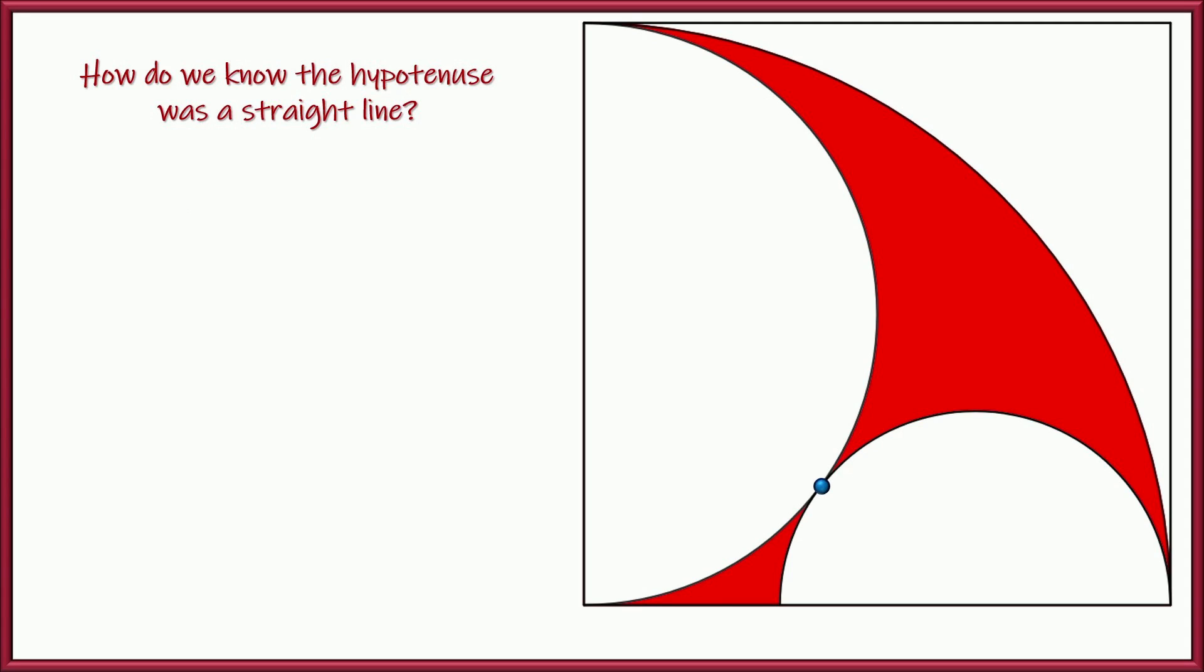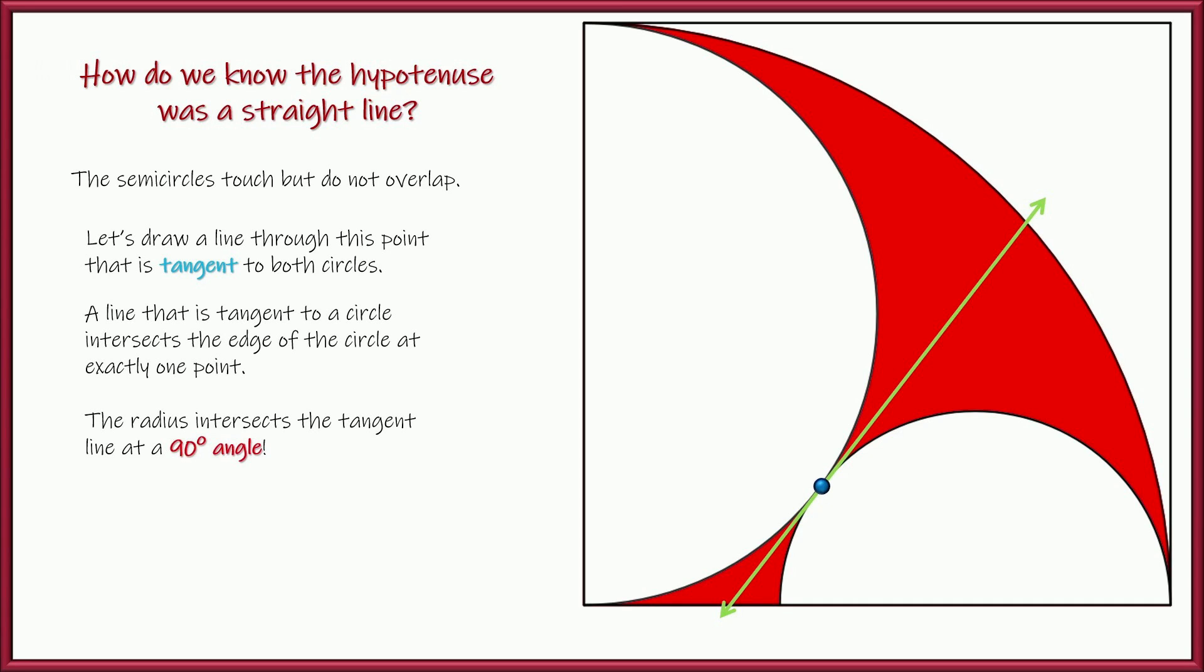So, yeah, we could formally ask the question, how do we know that that was a straight line? Well, here's how we know. We know that the two semicircles, of course, they touch. They don't overlap. So we could actually draw a line right through that point. It's called a tangent line. Now, a tangent line, of course, touches a curve or a circle at exactly one point. And if it's a circle, then the radius, so from the center to the point of tangency, well, it's perpendicular. It makes a right angle. So since this line is tangent to both circles, we could draw the radius for the larger semicircle as well. And they're both perpendicular. So 90 plus 90 is 180 degrees. So that makes this a straight line.